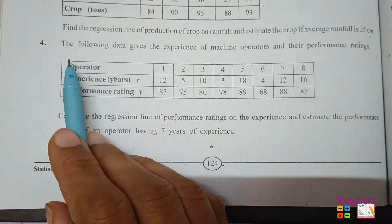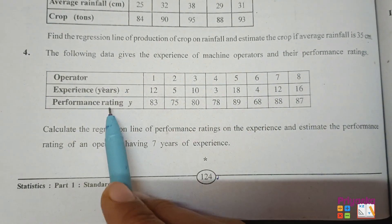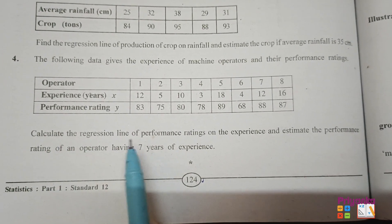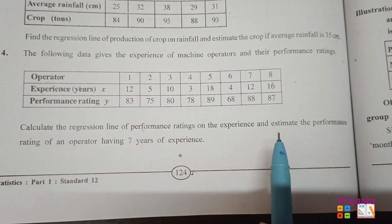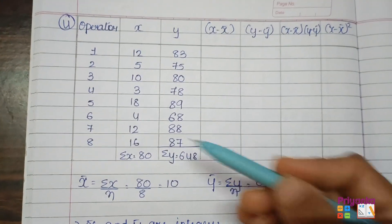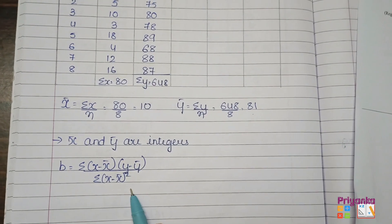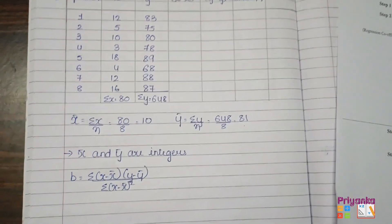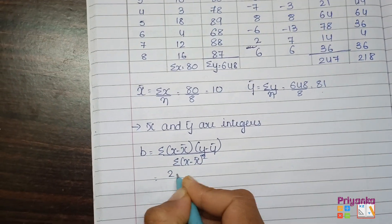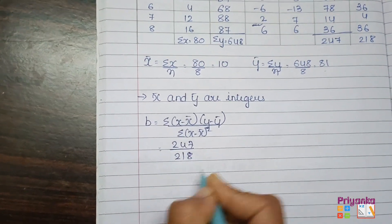Question 4: Data gives experience of machine operators and their performance rating. There are 8 operators; experience is x and performance rating is y. The task is to find the regression line of performance rating on experience and estimate the performance rating for 7 years of experience. From the table, x̄ = 10 and ȳ = 81. Using the deviation formula, σ(x−x̄)(y−ȳ) = 247 and σ(x−x̄)² = 218, giving b = 247/218 = 1.13.